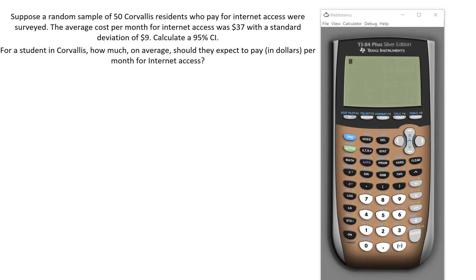The average cost per month for internet access was $37 with a sample standard deviation of $9. We're going to calculate a 95% confidence interval. We basically want to answer the question: for a student in Corvallis, how much on average should they expect to pay in dollars per month for internet access?